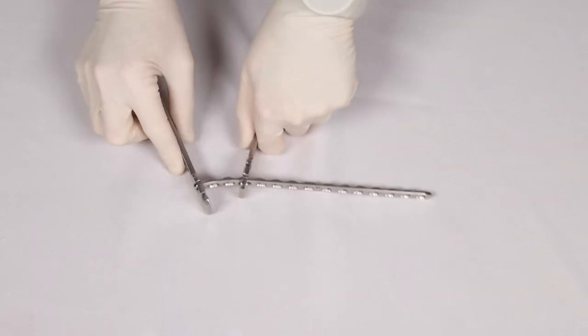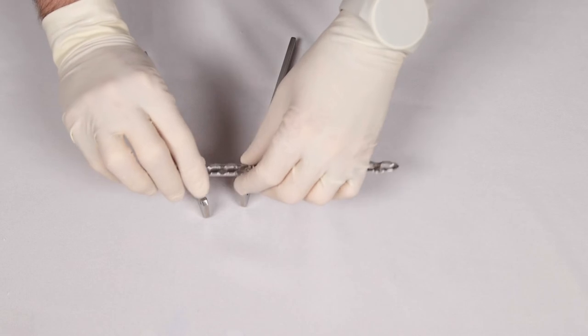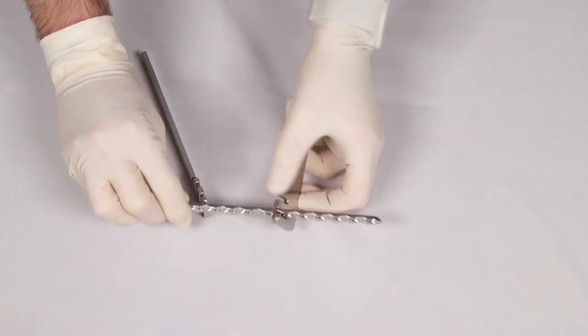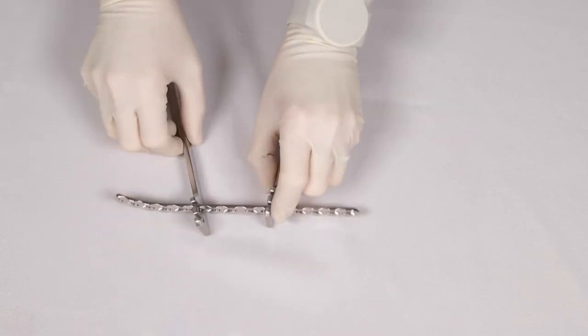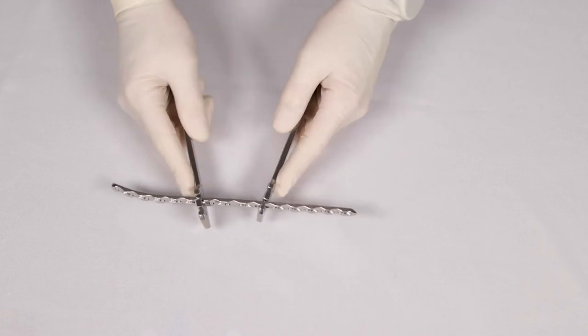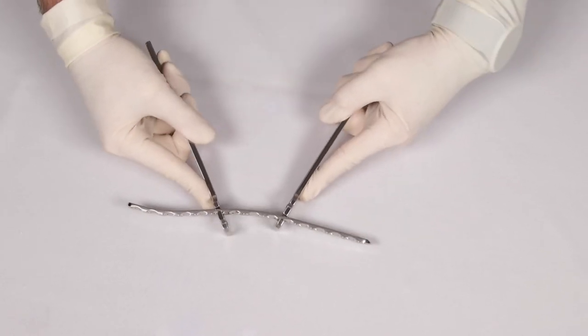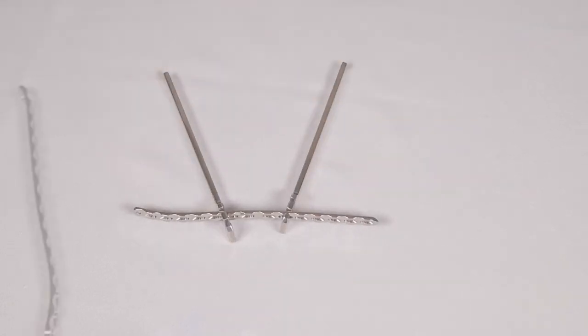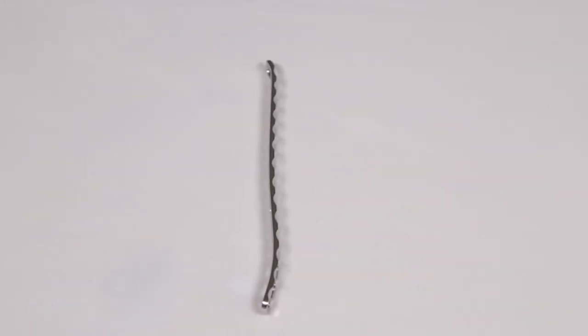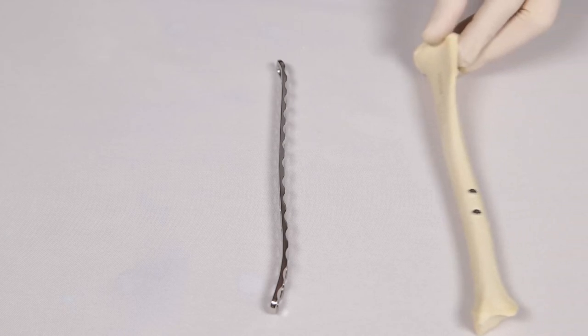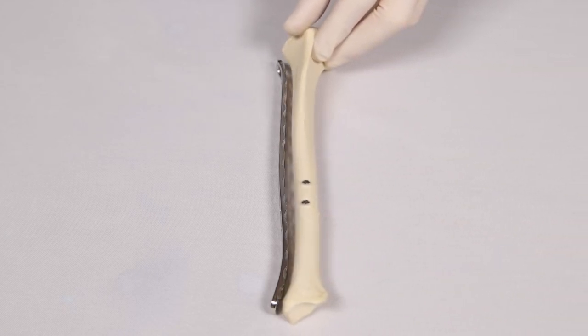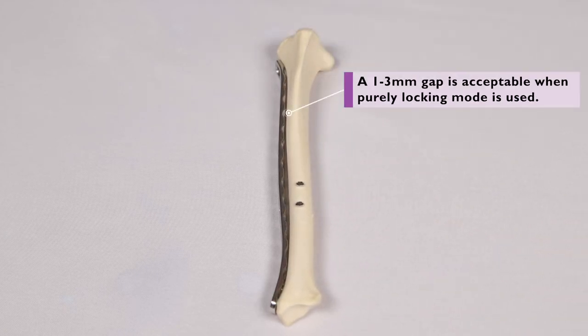If the DLP is being used in purely locking mode, as in this example, only approximate contouring of the plate to the bone is required, which can save time during surgery. A one to three millimeter gap is acceptable between the plate and the bone surface, which is beneficial for fracture healing, as soft tissue and periosteum can be left intact beneath the plate.